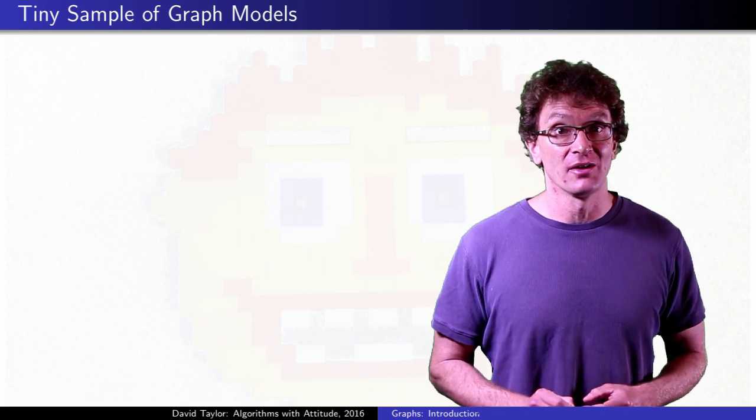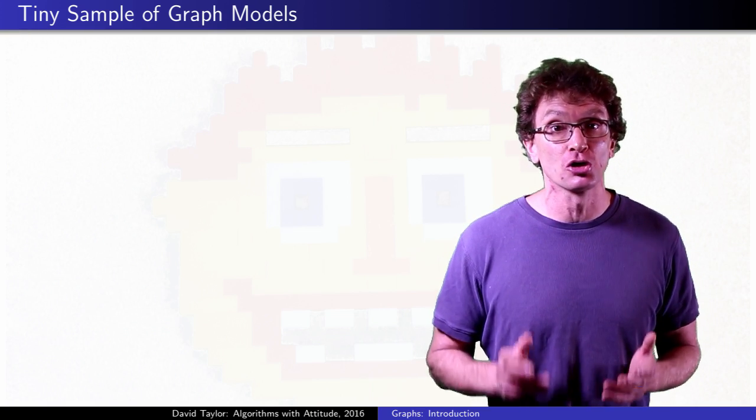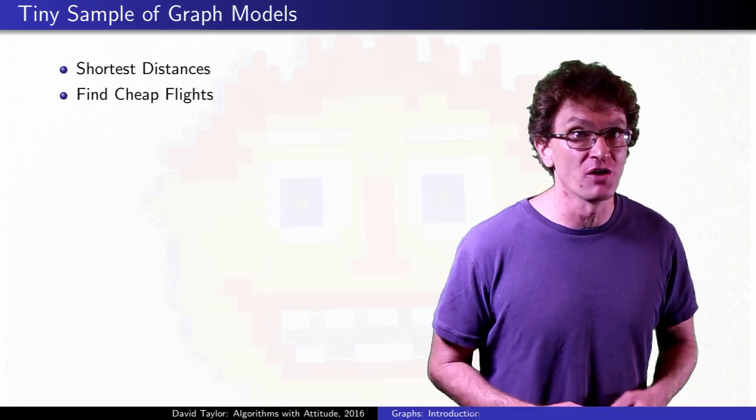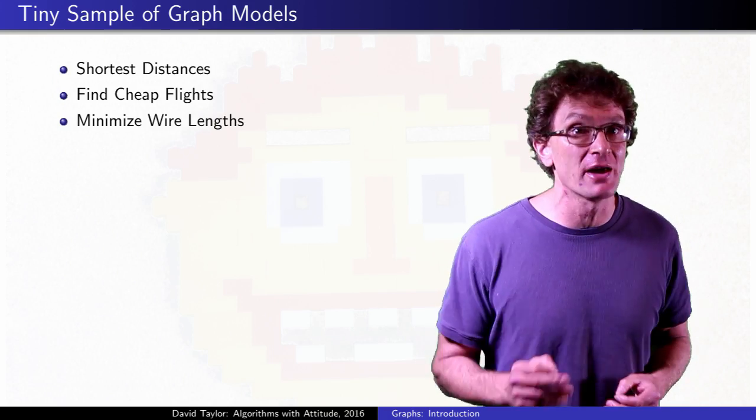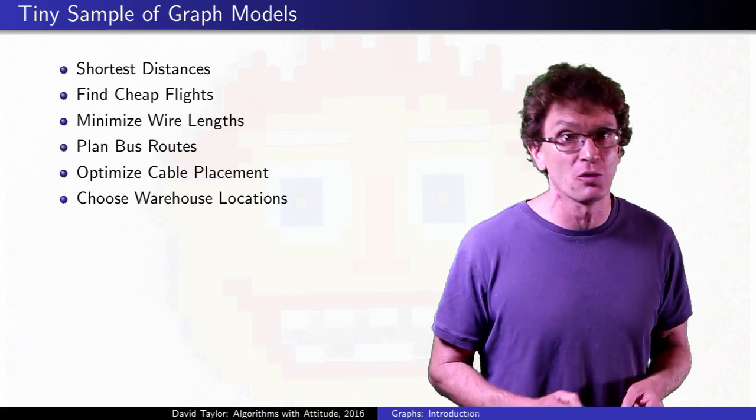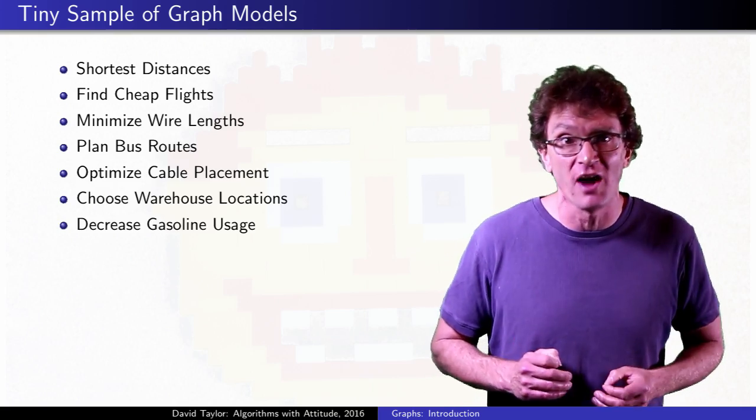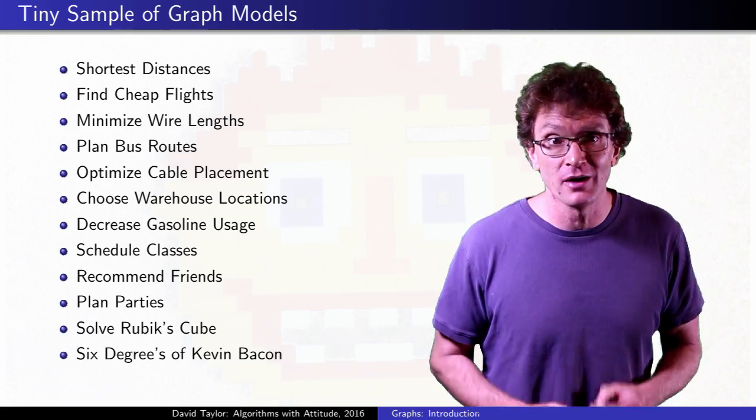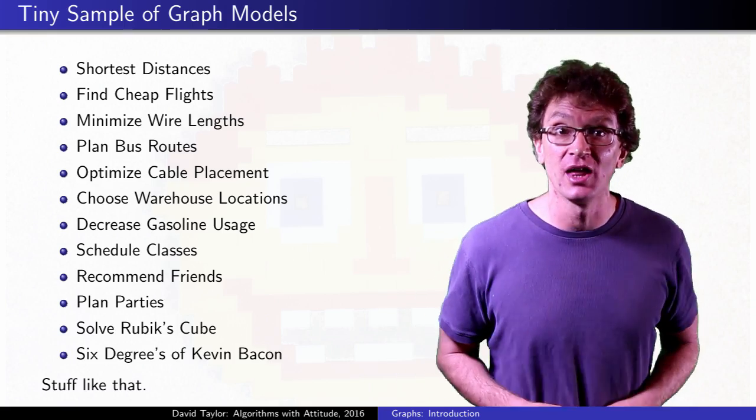Graphs are so versatile that it's hard to say what a typical graph problem looks like. They can be used to map shortest distances, find cheap flights, minimize wiring in a house, plan bus routes, optimize cable placement, choose Amazon warehouse locations, decrease gasoline usage by FedEx, schedule classes, recommend friends on Facebook, plan parties, solve Rubik's Cube, or figure out the six degrees of Kevin Bacon. You know, that kind of thing.